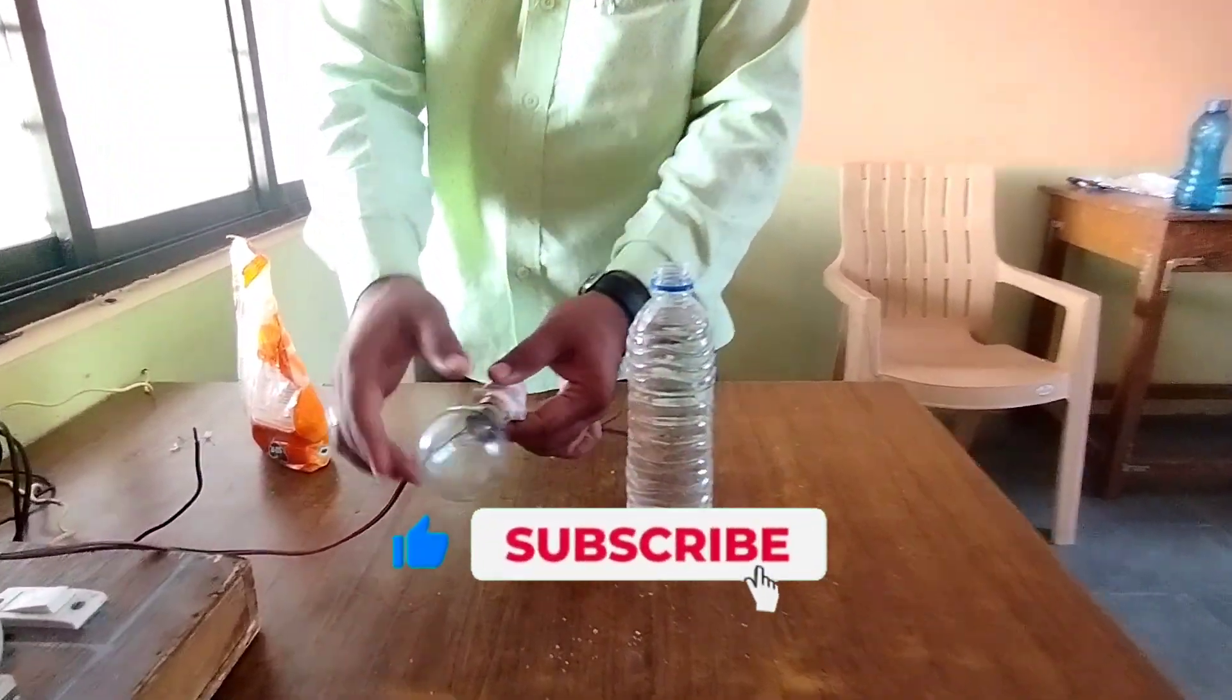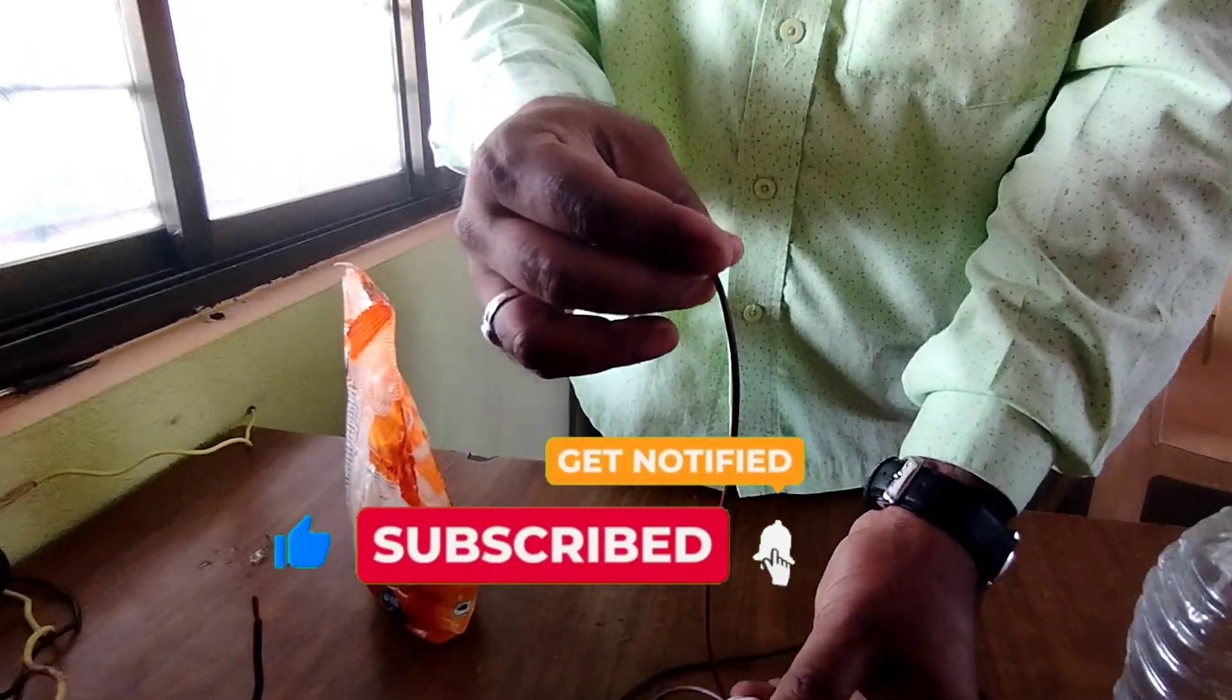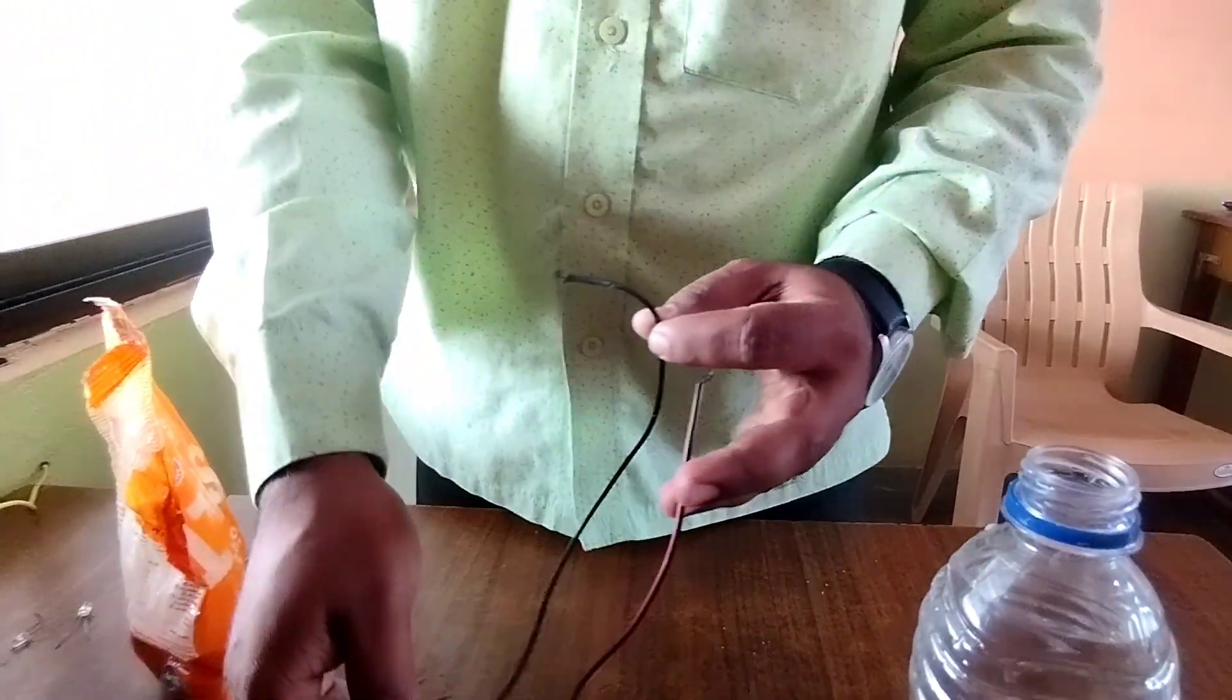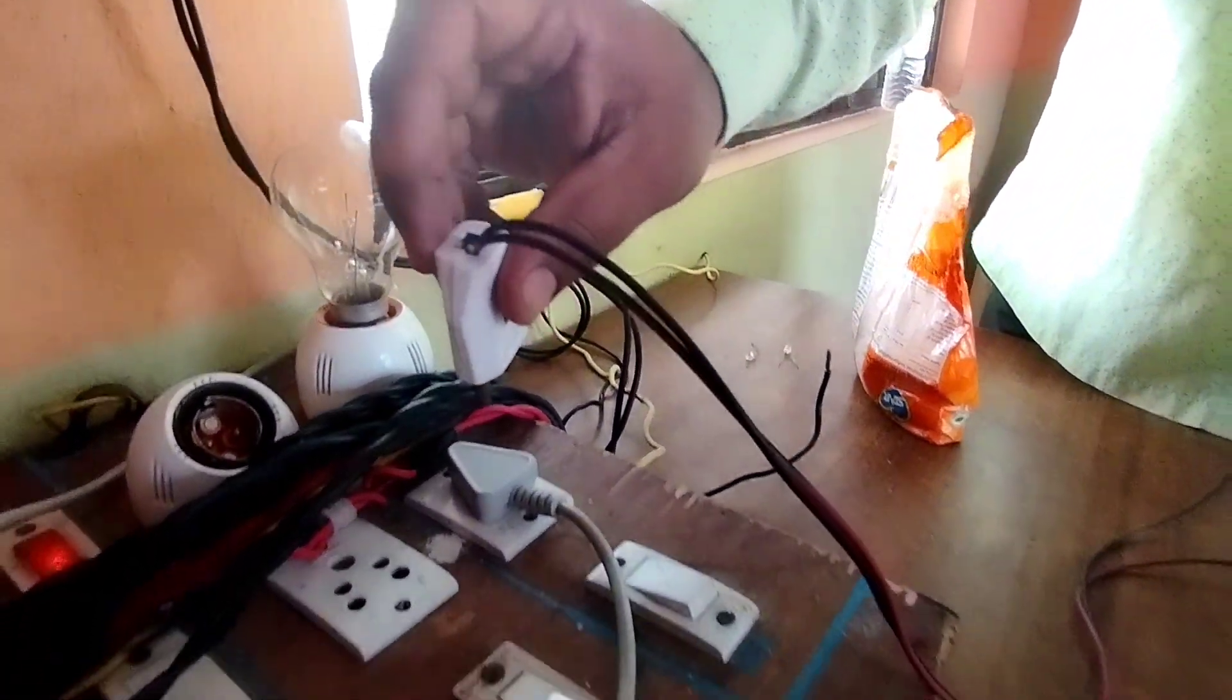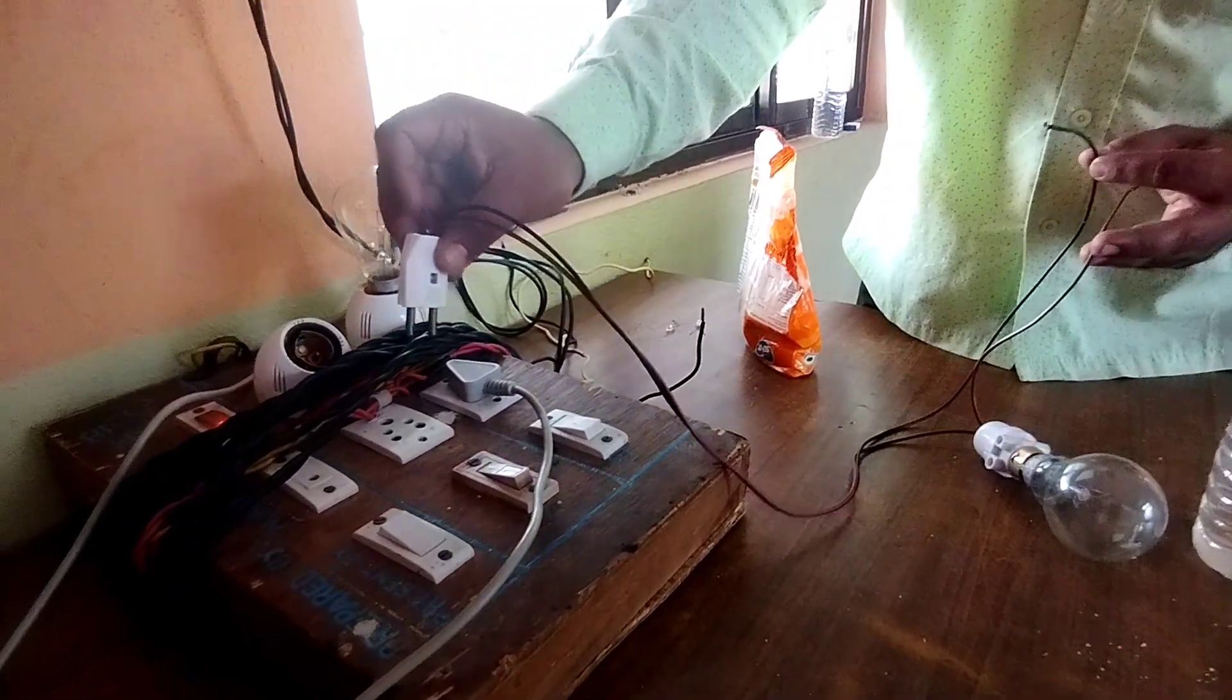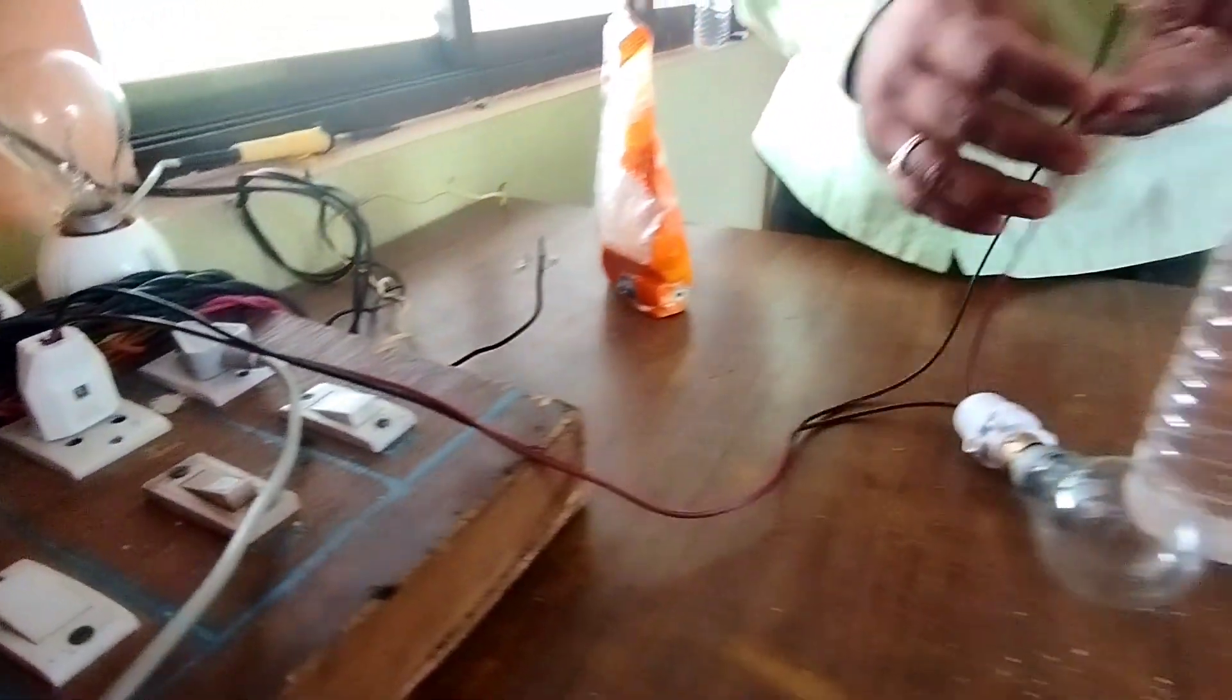This is the holder, this is the phase connection, and this is the neutral, given to the two-pin plug to supply. Phase is red color and black color is neutral for pure water.